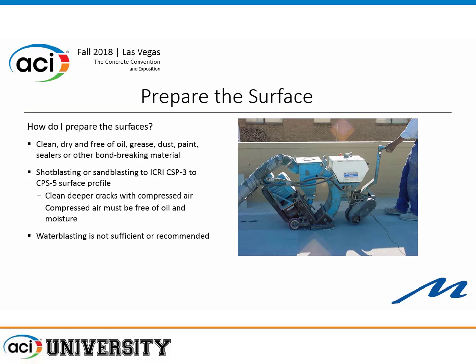My next slides will walk through how it's actually done. You need to clean the slab — remove grease, dust, paint, anything that might contaminate it. You can shot blast or sand blast to a CSP3; that's not a very heavy surface profile, so it doesn't require a lot. Clean the deeper cracks out with compressed air. We really don't recommend water blasting — it's usually not enough to create the surface profile you need, and it can interfere with the application of the methacrylate flood coat.